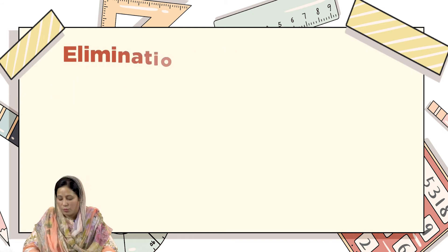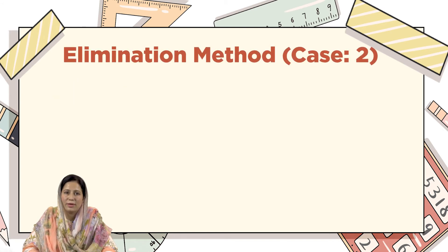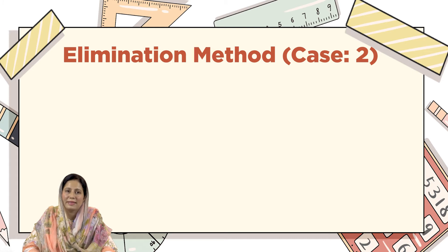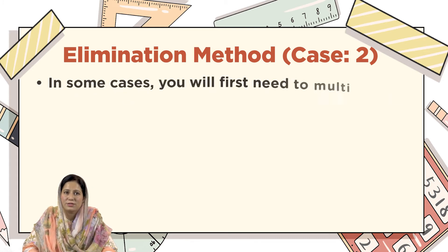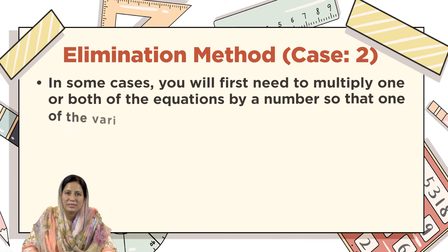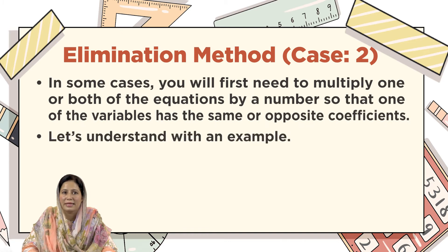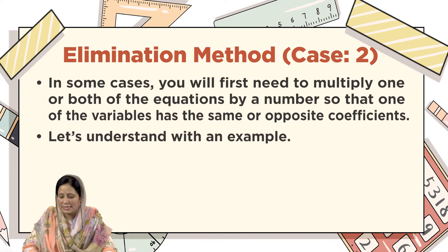Now, what about Case 2 — when the coefficients of any variable in the given equations are not the same? In some cases, you will first need to multiply one or both equations by numbers so that one of the variables has the same or opposite coefficients. Let's understand this with an example.